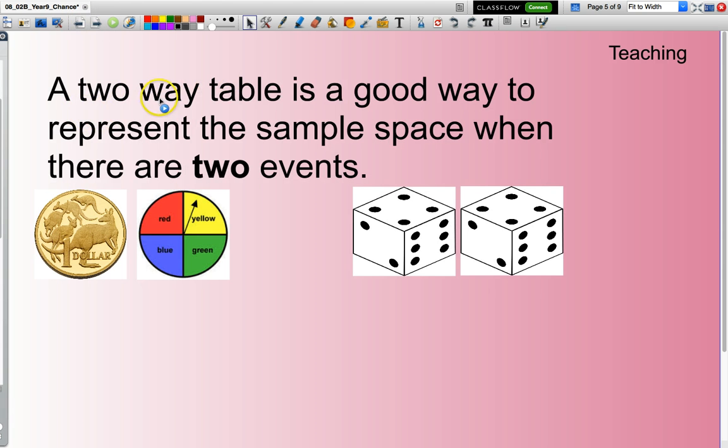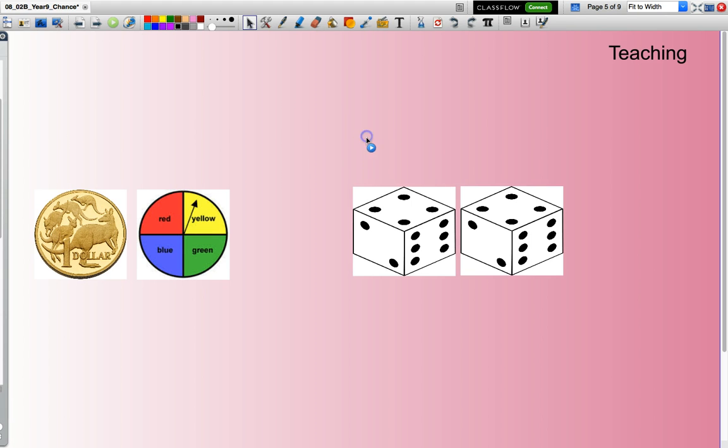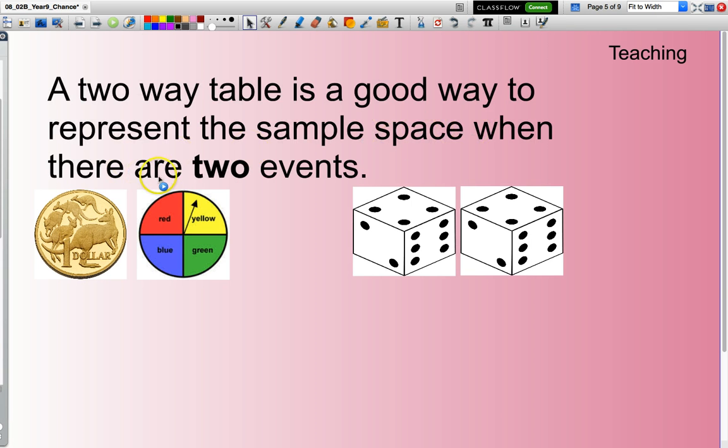A two-way table is a good way to represent the sample space when there are two events. Typically, two events may be tossing a coin and looking for a head or a tail and spinning a spinner to see what colour the needle lands on, or tossing two dice and having a look to see what the sum of their faces are.